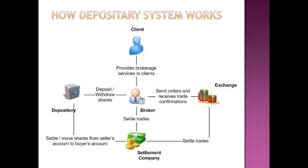The client's account is processed, and the demat account number is given to the client through the broker after receiving the form along with all the client's details like name, address, and bank card number. Now, any kind of purchase or sale of shares happens through the broker. The broker helps buy or sell the shares for the client. When purchase or sale happens, it is informed to the depository. The depository, upon receiving the purchase or sale order from the client through the broker, communicates it to the settlement company.